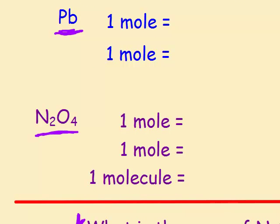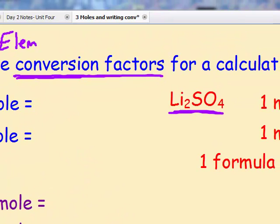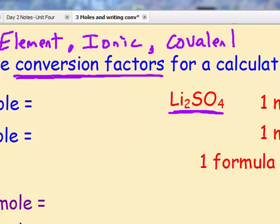Now I chose these three because they represent each of the three fundamental particles we discussed in the other video that you can put with Avogadro's number. They would be if you have an element all by itself, if you have an ionically bonded substance, or if you have a covalently bonded substance.